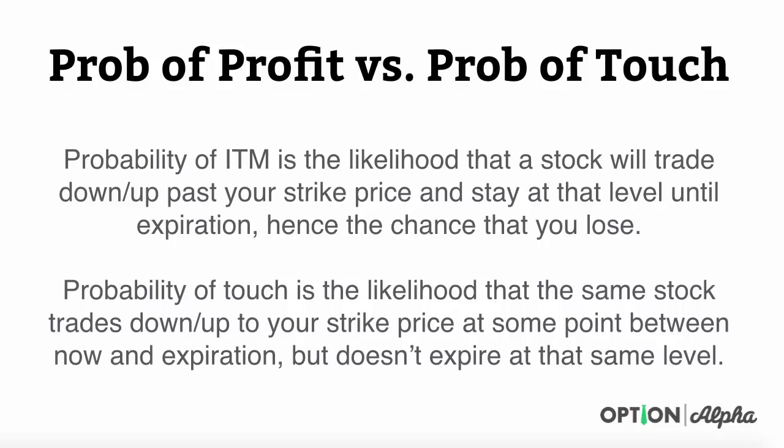The first is that probability of ITM, or in the money, is the likelihood that a stock will trade up or down past your strike price that you have sold and stay at that level until expiration. This is the chance that you lose money on a trade. If you are selling options out of the money and you don't want the stock to rally higher or fall lower than your strike, this probability calculation will tell you the exact likelihood that you lose on the trade.